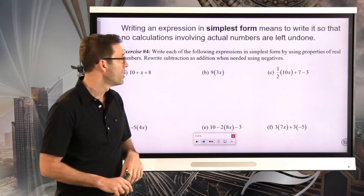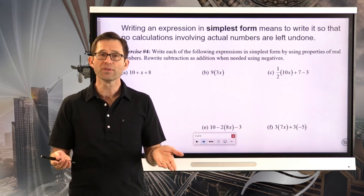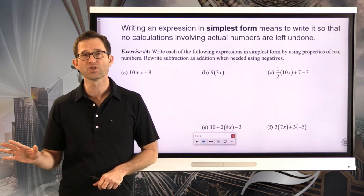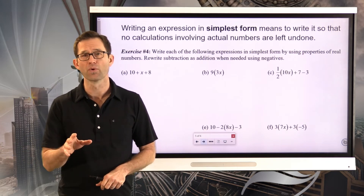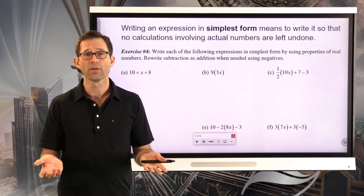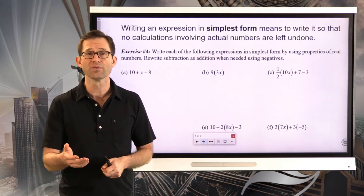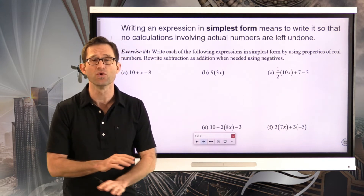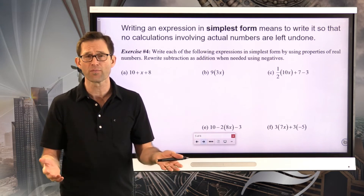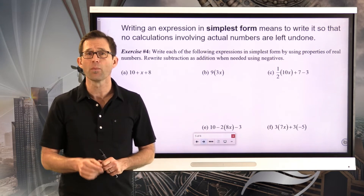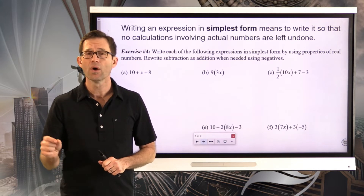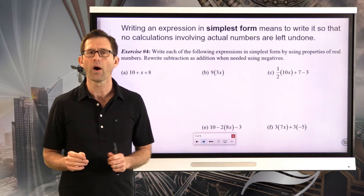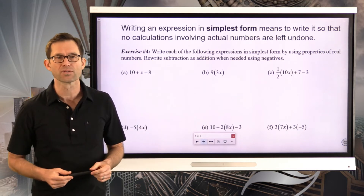Writing an expression in simplest form means to write it so that there are no calculations left involving normal numbers that could be done. There are always calculations left because there are variables whose values we don't know. But to simplify an expression means to do everything we possibly can in terms of arithmetic — like doing the 3 halves times 8 to make it 12.